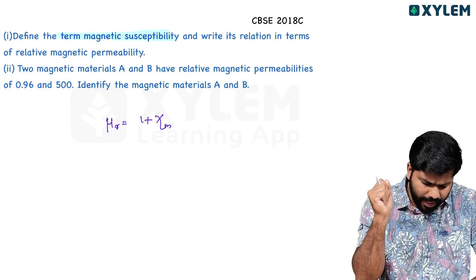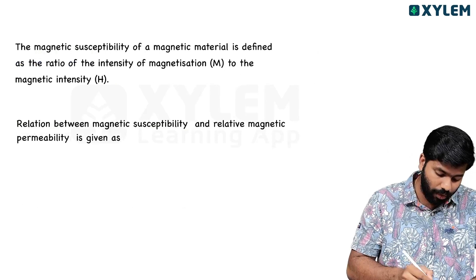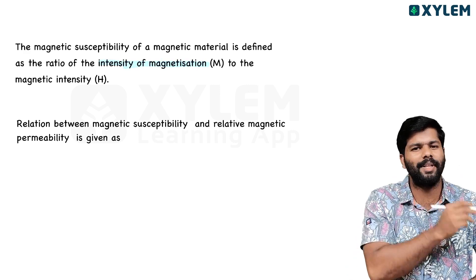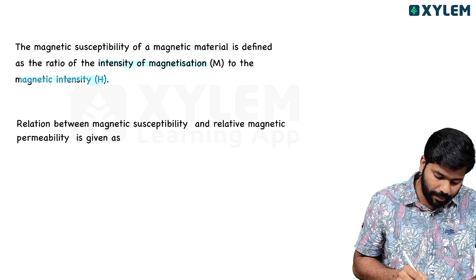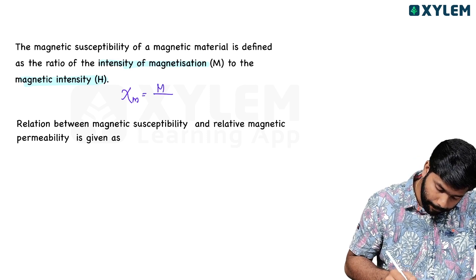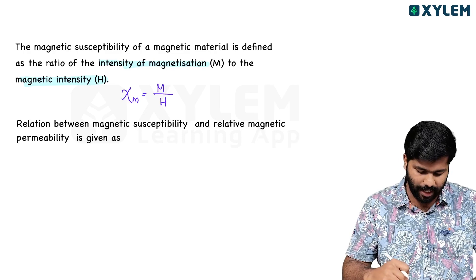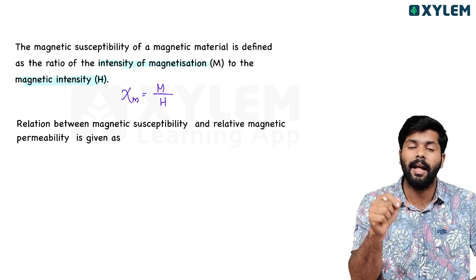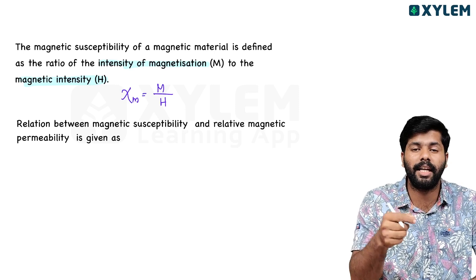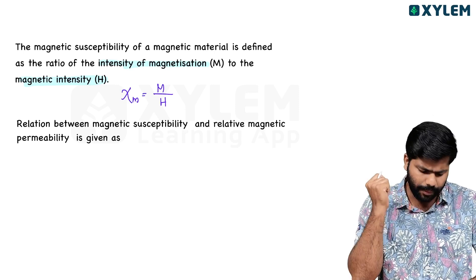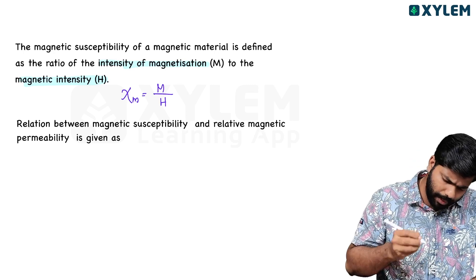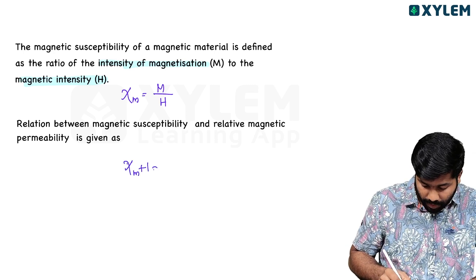What is magnetic susceptibility? It is defined as the ratio of intensity of magnetization (M) to the magnetic intensity of the magnetizing field (H). So susceptibility χm = M/H. This is the definition. Magnetic susceptibility describes how a material behaves in response to an external magnetic field.